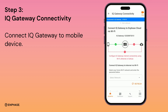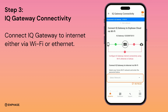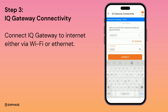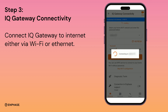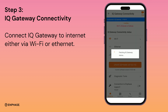Now connect the IQ Gateway with the internet. Select a Wi-Fi signal from the drop-down and enter credentials. You can also provide internet by connecting an Ethernet cable to the IQ Gateway.